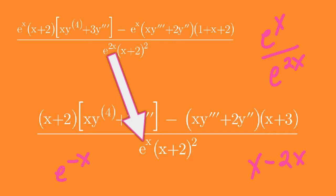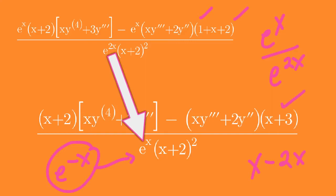A negative exponent is not allowed, so the whole expression is written in the denominator. Meanwhile, we can add 1 and 2, giving us x plus 3.